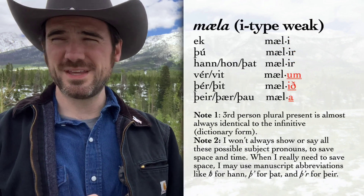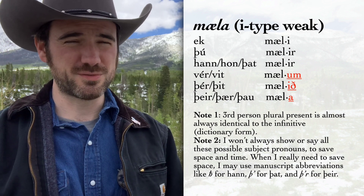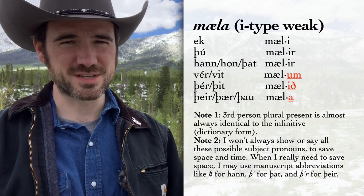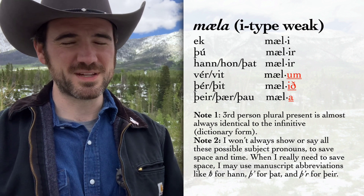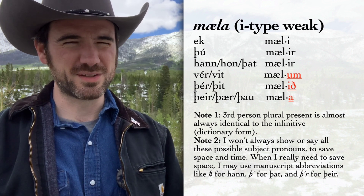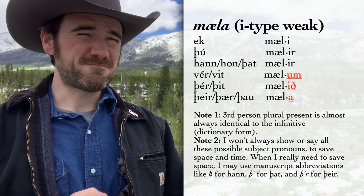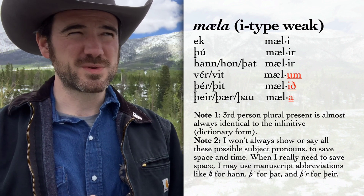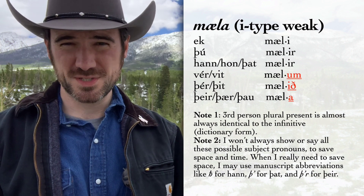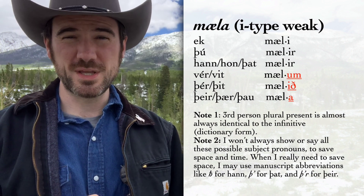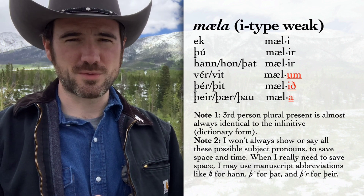-um, -ið, -a in the plural is going to be true for almost all verbs. There are obviously going to be a few exceptions, but -um, -ið, -a you can remember pretty confidently for just about every verb. Also, we've recently talked about personal pronouns in this series — if you're using the duals, 'we two' and 'you two,' vit and þit, you just use the plural form of the verb. There's no special dual form of the verb like there is in some European languages.